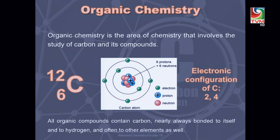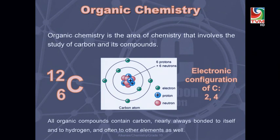Now you might be familiar with the periodic table. If you take the periodic table you will see that carbon is in group 4, and the symbol for carbon is C. The mass number is 12 and atomic number is 6. When we draw the atomic structure for carbon, it has got 6 protons and 6 neutrons in the nucleus and 4 electrons in the outer shell. This is why carbon has 4 valence electrons.